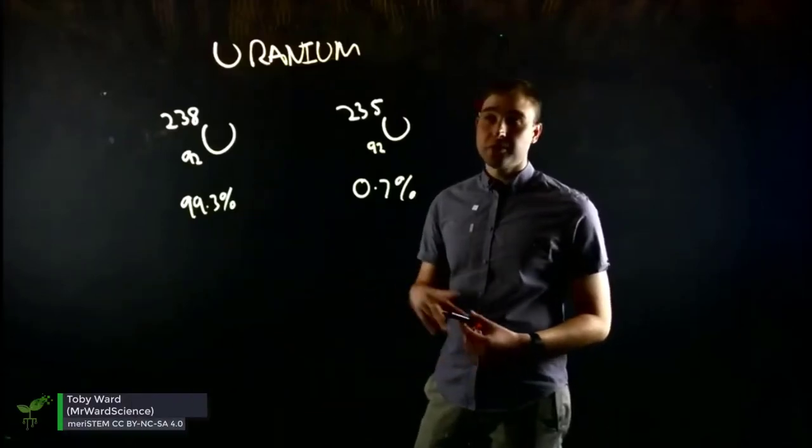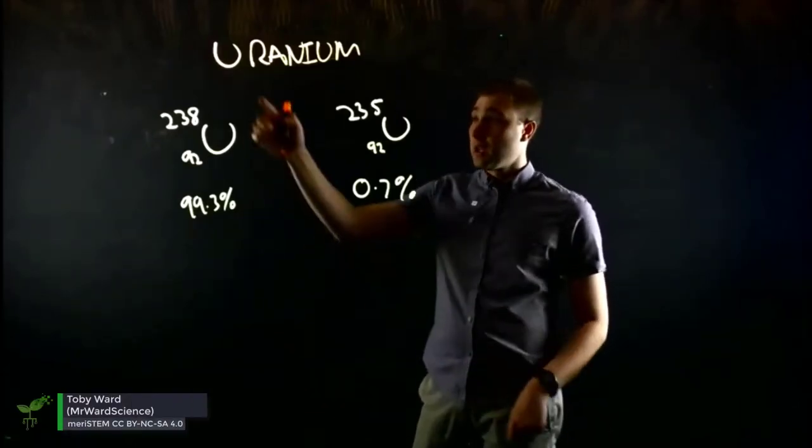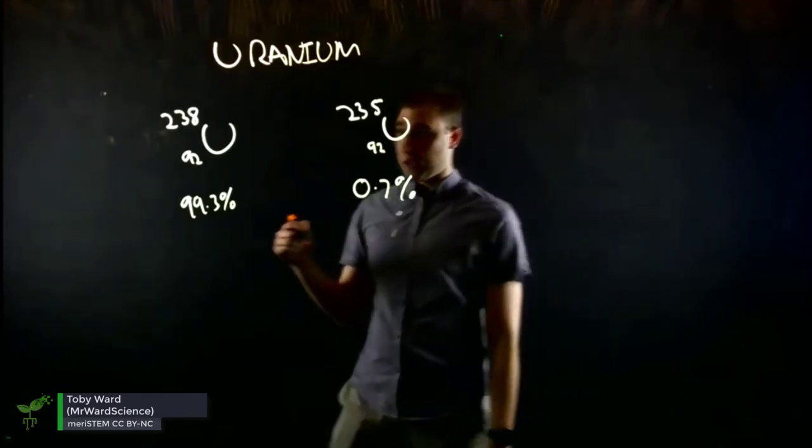Now let's talk about uranium. Uranium has two big isotopes that I want to talk about. Most of the uranium you dig out of the ground is uranium-238.